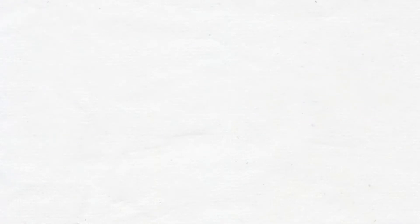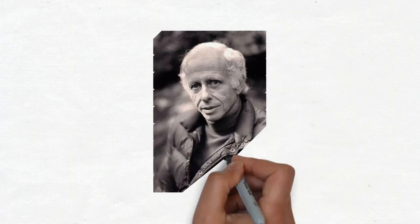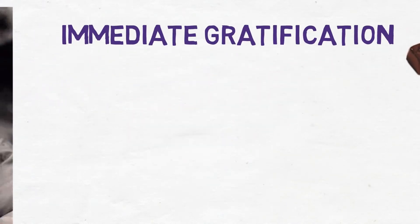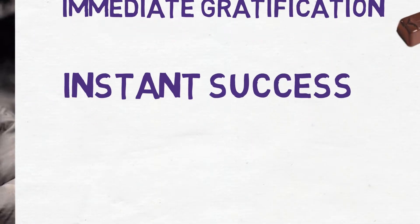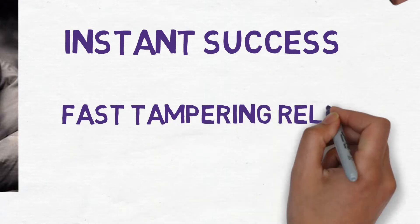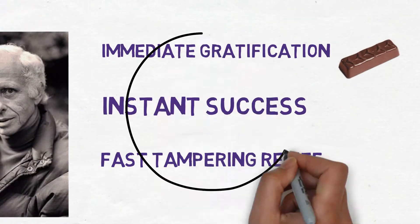George Leonard tells us about the modern world's conspiracy against mastery. We are continually bombarded with immediate gratification, instant success, and fast relief, all of which lead us in exactly the wrong direction. The author calls this anti-mastery.